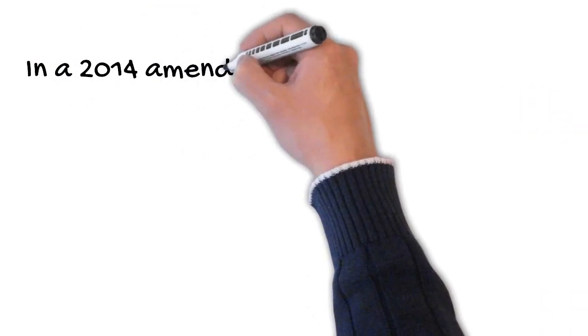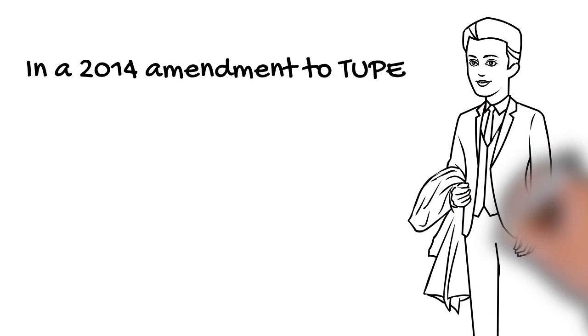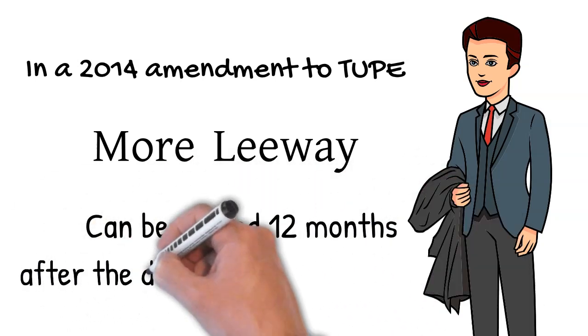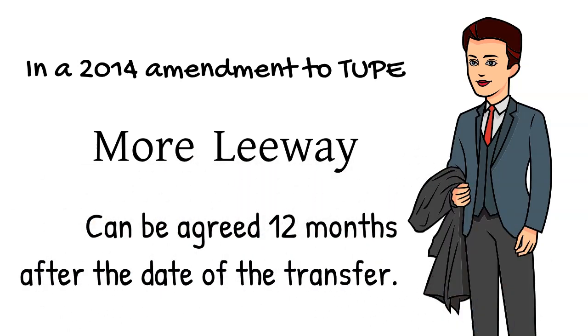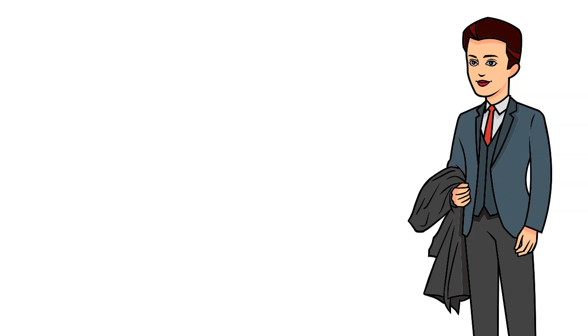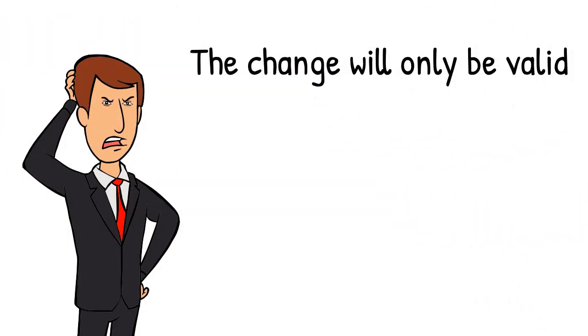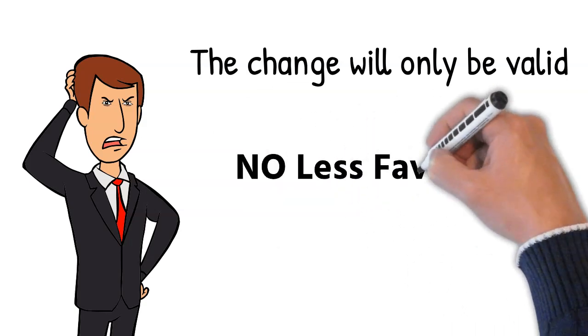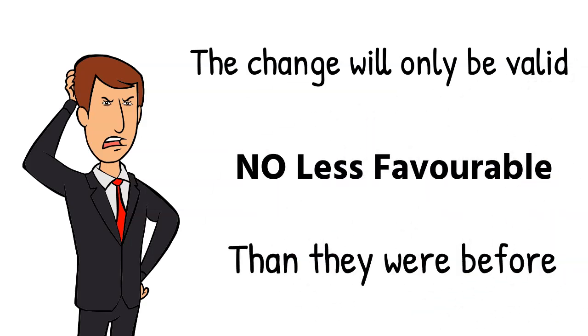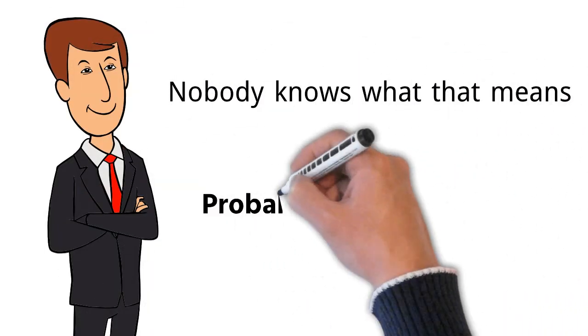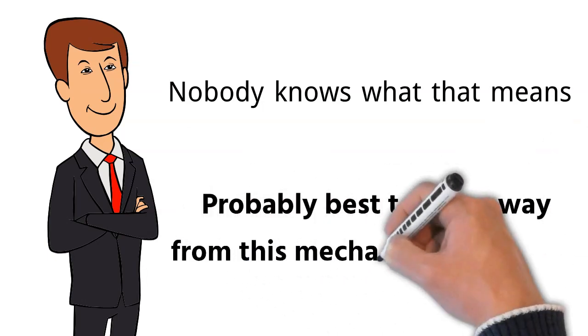Now, in a 2014 amendment to TUPE, the government tried to give employers more leeway by providing that a change in terms can be agreed 12 months after the date of the transfer. Unfortunately, though, this only applies to terms and conditions derived from a collective agreement. What's more, the change is only valid if the new terms are overall no less favourable to the employee than they were before. Quite how that's to be measured or determined is far from clear, and it's probably best to stay away from this mechanism altogether.